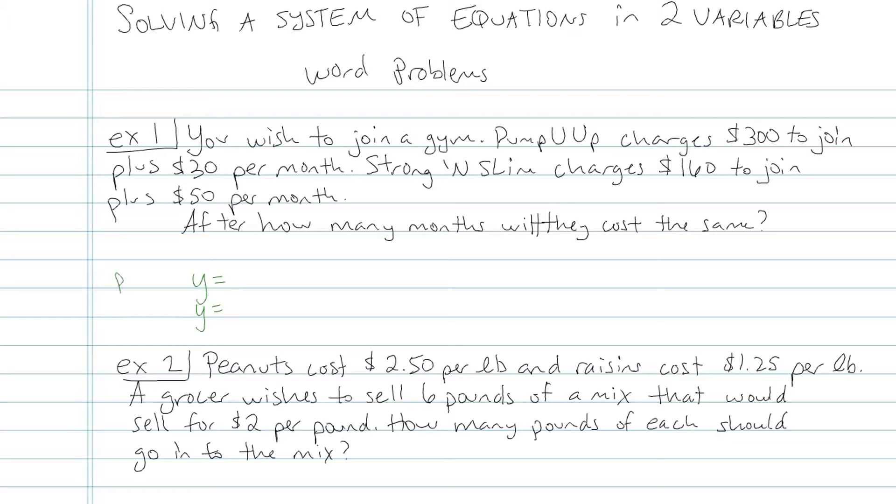So Pump You Up, P-U-U, is $300 to join. I only pay that once, but then I pay $30 every month. Contrast that with Strong and Slim, where it charges $160 to join plus $50 per month. There it is. There's two equations with two unknowns. This is totally set up for substitution where I'm going to write each equation equal to the other. And then if I solve for m, I'll get m is equal to seven months.